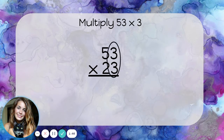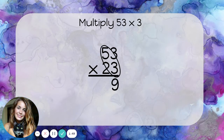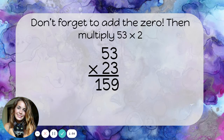Three times three is nine, and three times five is fifteen. That's fifty-three times three. Now we add a zero in the ones place of our second number like this.